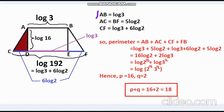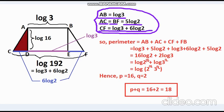Finally, now we have all the information to calculate the perimeter of the trapezoid. Here, AB is log 3, AC and BF is 5 log 2, and AF is log 3 + 6 log 2. Now, plugging these values, we get the perimeter is log(2^16 × 3^3).